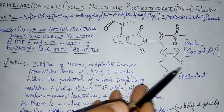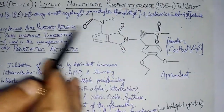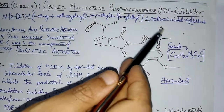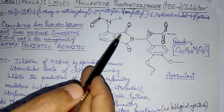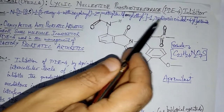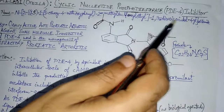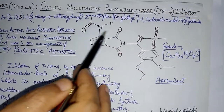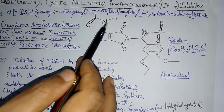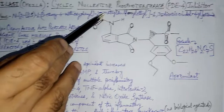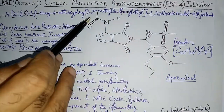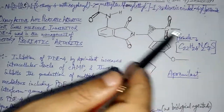The remaining IUPAC name reads: 3-ethoxy-4-methoxyphenyl — referring to this moiety on the structure — 2-methylsulfonylethyl, 1,3-dioxoisoindol-4-yl acetamide. The acetamide residue is shown here, with the methyl group indicated by these lines in the chemical structure.